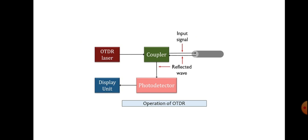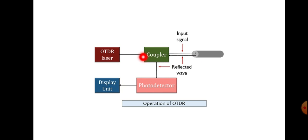Looking at the block diagram: here we use a laser source, and the light signals generated will be passed to the optical fiber cable. For that, we need a coupler — a three-port device that couples the input signal to the output signals. However, not all input signals will be coupled to the fiber. We can use a coupler or a circulator instead, but the cost of the circulator is higher.